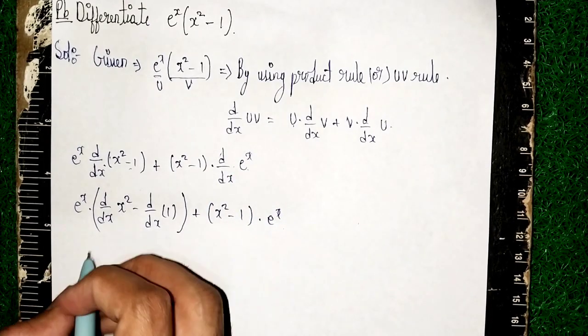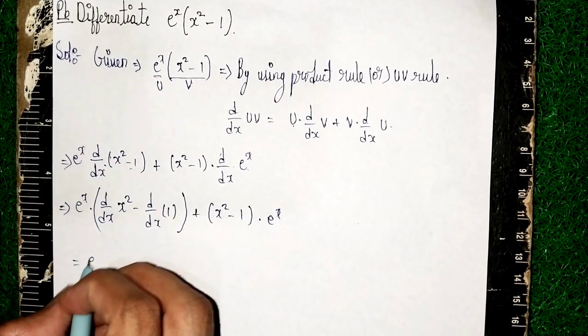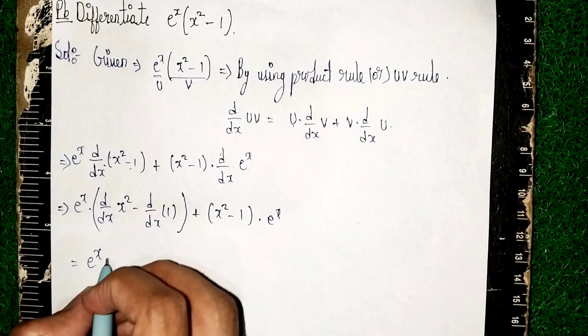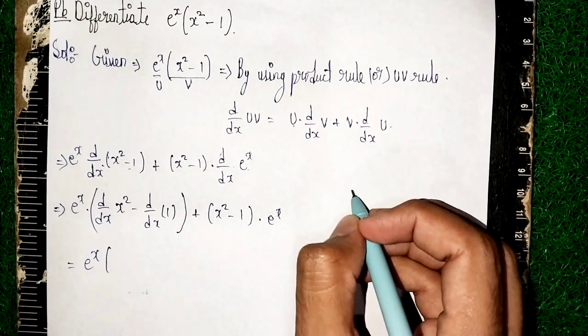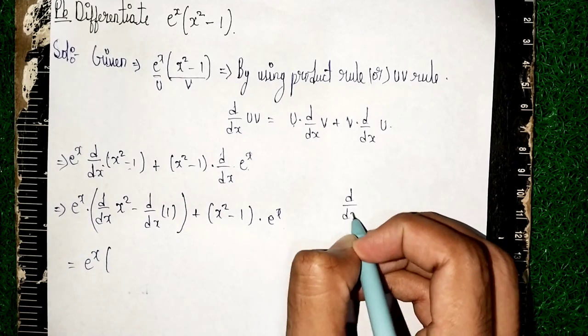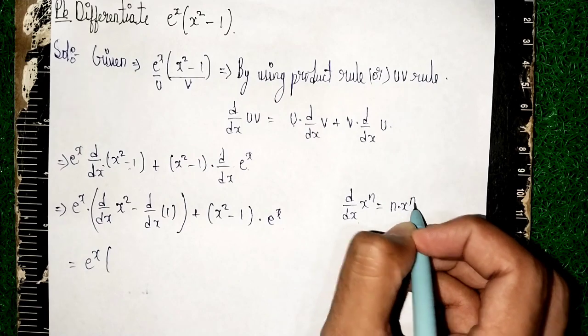Now what will happen here? Another step. Now e^x into, now here I am using differentiation formula. Which formula is d/dx of x^n, so it will become here n into x^(n-1).